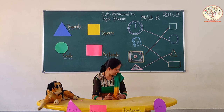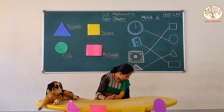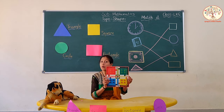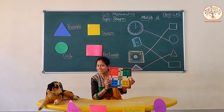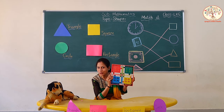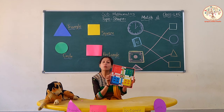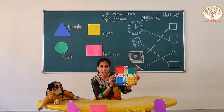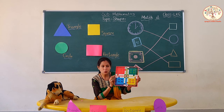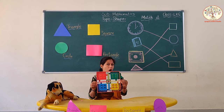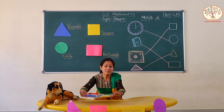Let us start. Now, see. What is this? This is a Ludo. Do you play Ludo? What is the shape of Ludo? It is square. So, it will go to the house of square.